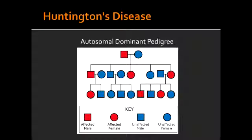What happens to the striatal nuclei in Huntington's Disease? There could be an atrophy of the striatal nuclei, which is the main inhibitor of movement, and this can be seen on imaging.